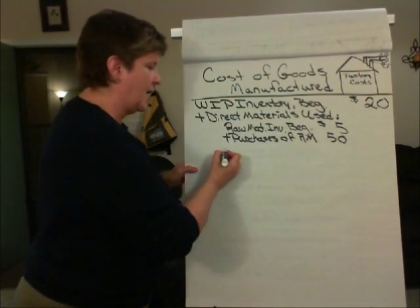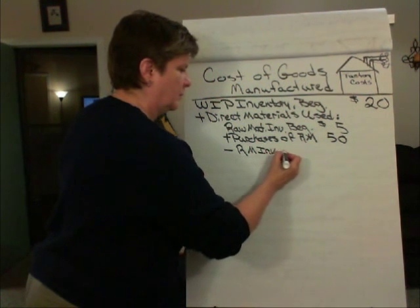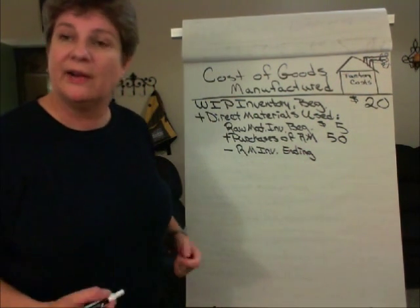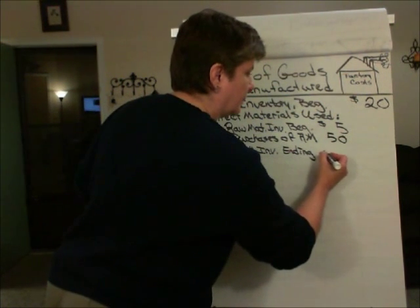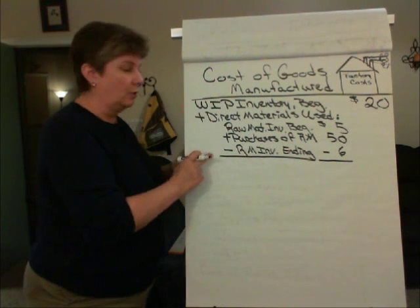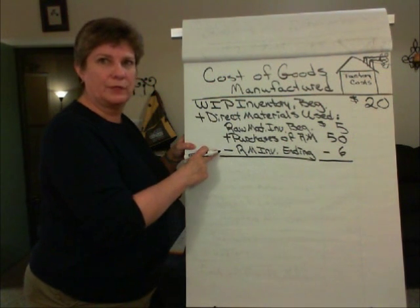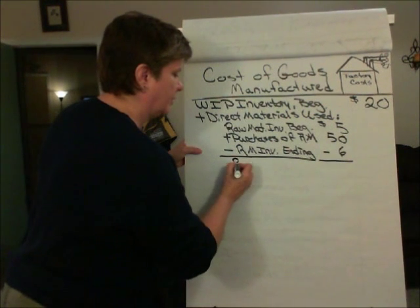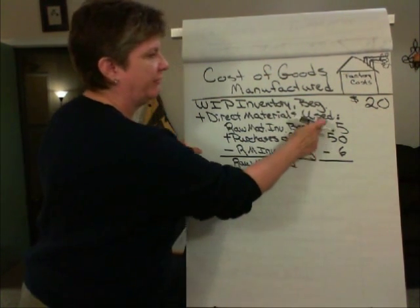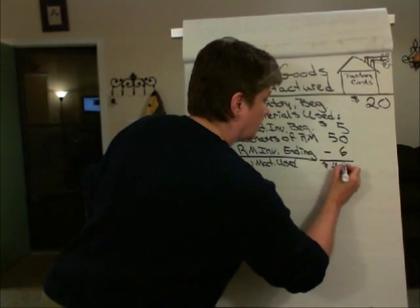Then we subtract out the ending raw materials inventory. For the sake of illustration, let's say our ending raw materials inventory was $6. That gives us a subtotal: beginning raw materials inventory plus purchases of raw materials minus raw materials ending inventory from the physical count gives us raw materials used. So, $55 minus $6 — our raw materials used is $49.